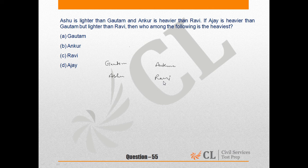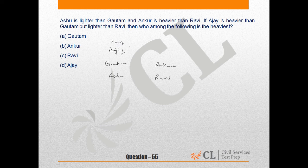Ajay is heavier than Gautam but lighter than Ravi, so Ravi will be above Ajay. If Ravi is here, we know Ankur is above Ravi, so Ankur will be placed above Ravi in the order.